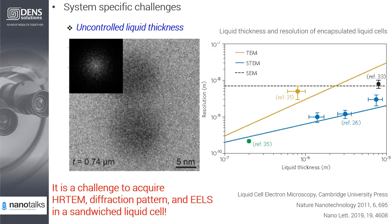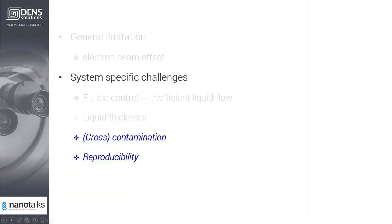Theoretical calculations show that 1–2 Å resolution can be achieved with a liquid thickness of about 100 nm, but controlling liquid thickness in a liquid cell remains a challenge. Using different solutions in LPTEM also introduces cross-contamination issues, making it difficult to obtain reliable or reproducible experimental results.